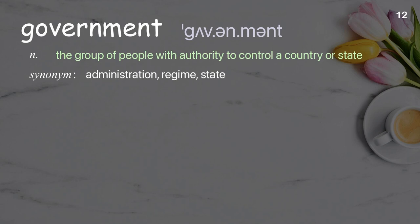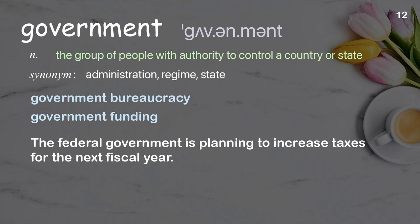Government: the group of people with authority to control a country or state. Examples: government bureaucracy, government funding. The federal government is planning to increase taxes for the next fiscal year.